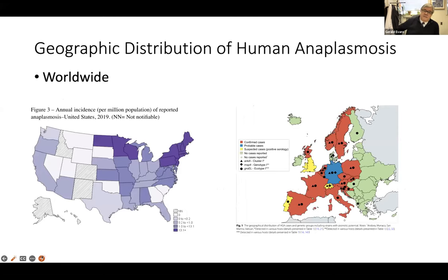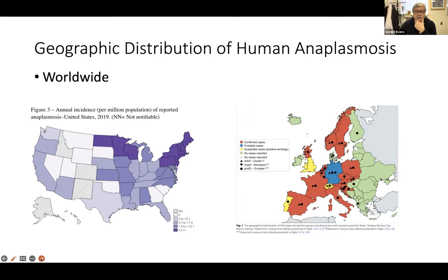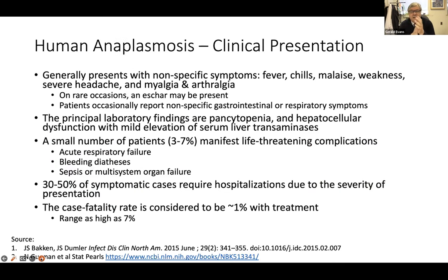Anaplasmosis is not unique to North America — it's worldwide in distribution. A 2019 US update shows most cases follow the same distribution as Lyme disease, with highest incidence in the Northeast and upper Midwest. In Europe, cases have been confirmed, probable, or suspected based on serology across various jurisdictions. The clinical presentation unfortunately has nonspecific symptoms: fevers, chills, malaise, weakness, headache, myalgias, and arthralgias. You may sometimes see an eschar at the bite site, and patients can sometimes report GI or respiratory symptoms, though those are uncommon.